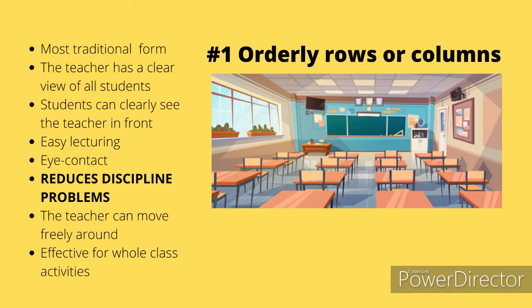Number one: orderly rows or columns. This has been the traditional form of seating for many years in most schools. The teacher has a clear view of all the students and all the students can see the teacher. It makes lecturing easy, enables the teacher to maintain eye contact, and helps reduce discipline problems. If the rows are well organized, the teacher should be able to move freely around the classroom.